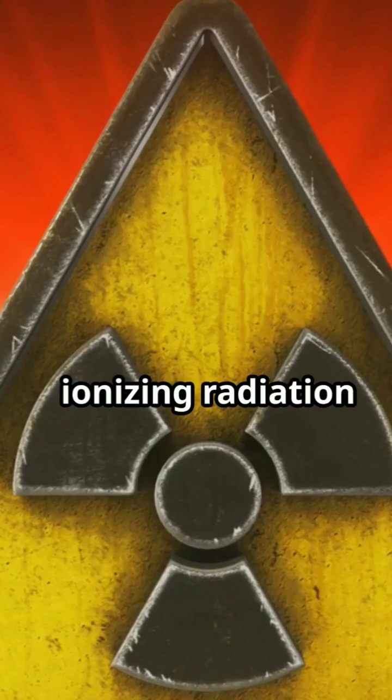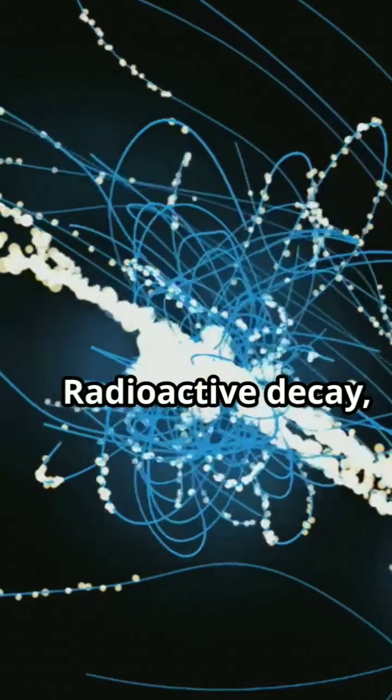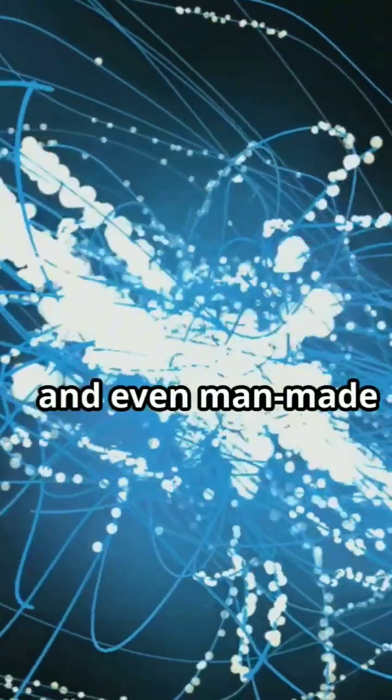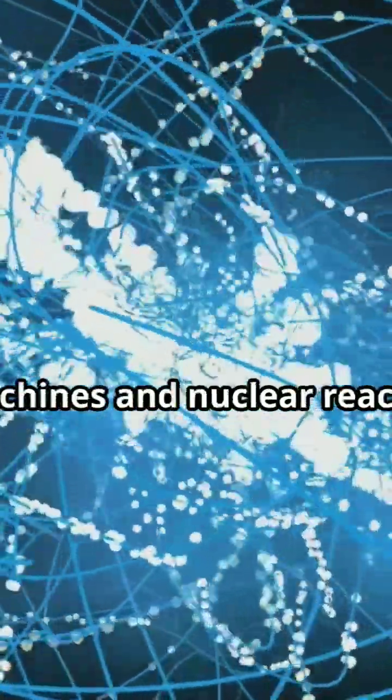So, where does this ionizing radiation come from? Radioactive decay, cosmic rays, and even man-made sources like x-ray machines and nuclear reactors.